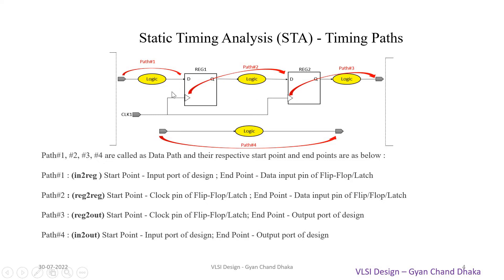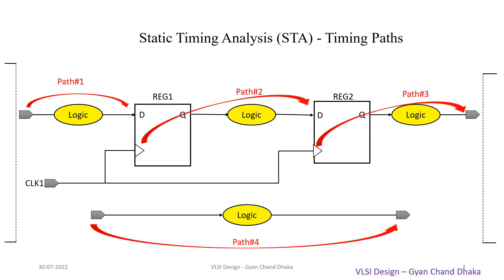All the timing paths we saw — input-to-register, register-to-register, register-to-output, and input-to-output — are called data paths. The data travels from the input to the data pin of the flip-flop, and at each rising clock edge the data travels from register to register, or from the Q pin through to the output port, or through combinational logic from input to output port. These four paths are all called data paths.